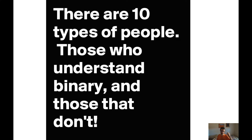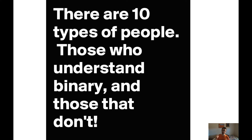This is where the very old joke comes from — you can't really pronounce it out loud. It says: there are 10 types of people, those who understand binary and those who don't. Because in binary, 1, 0 represents the number 2. If you read it as there are 2 types of people who understand binary, those who understand binary and those who don't — that's the joke.